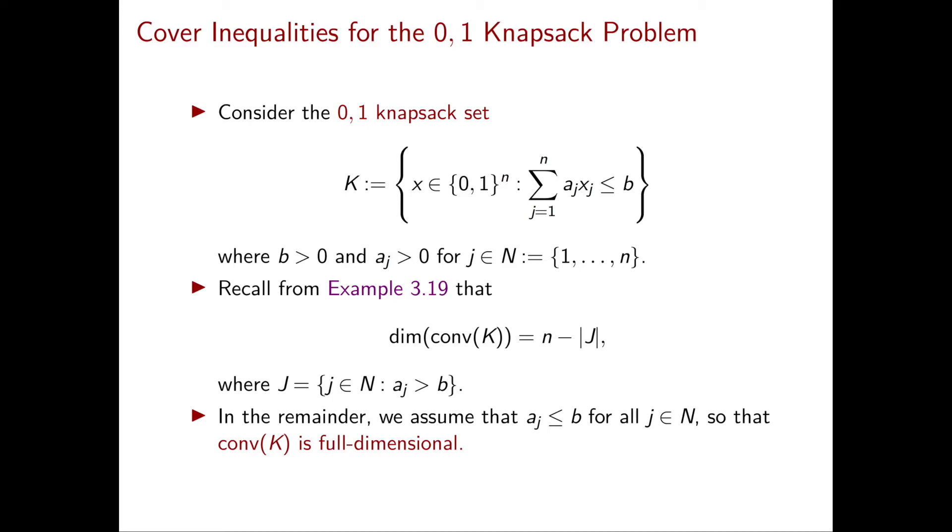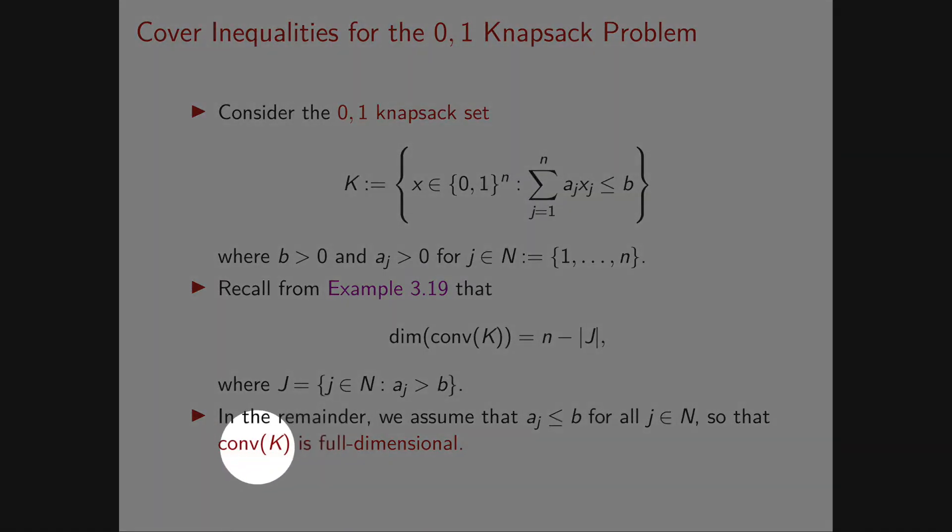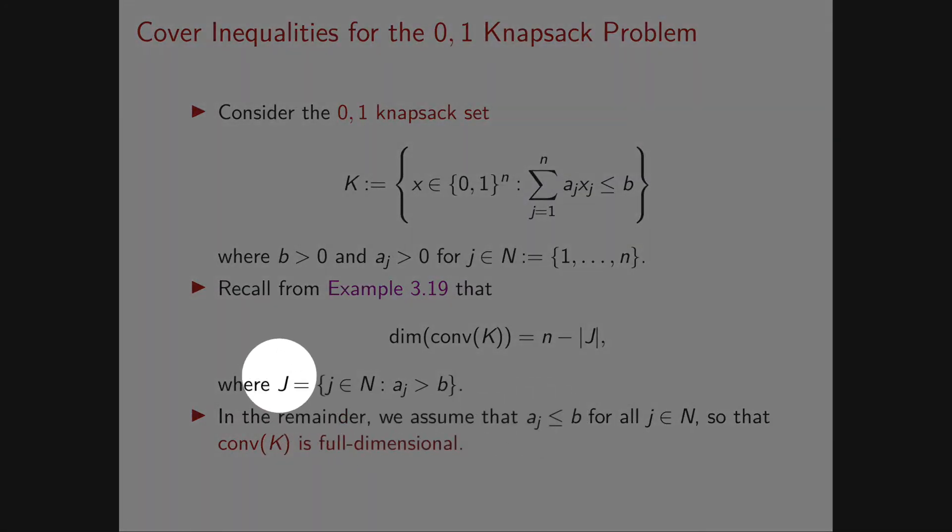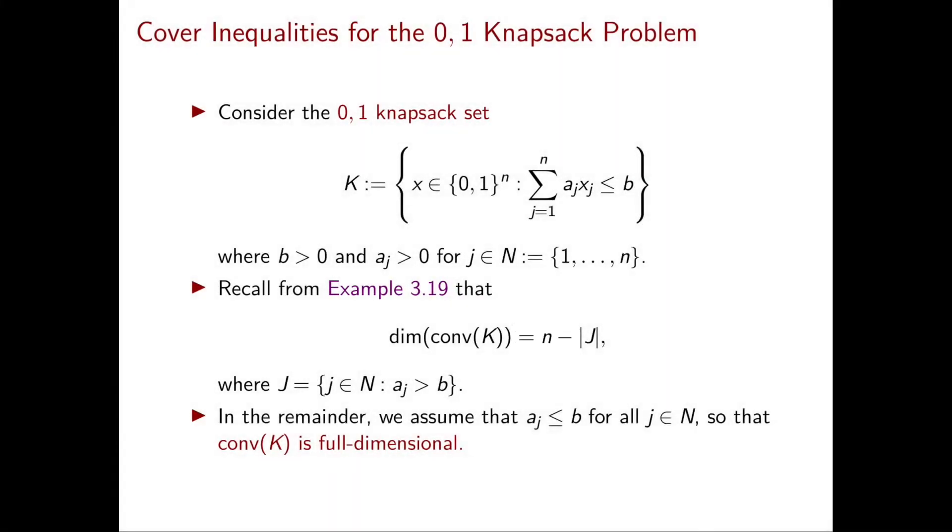In our subsequent discussion, we assume that the convex hull of K is full-dimensional. We assume that for every item, its weight is upper bounded by the weight limit. In this way, the set J is the empty set, so the dimension of the convex hull of K is exactly n, and conv(K) is full-dimensional.